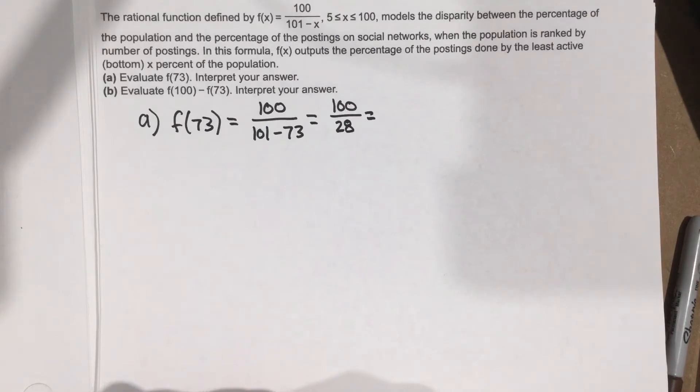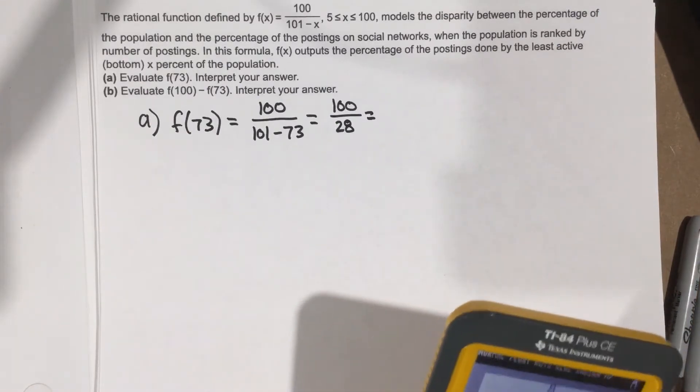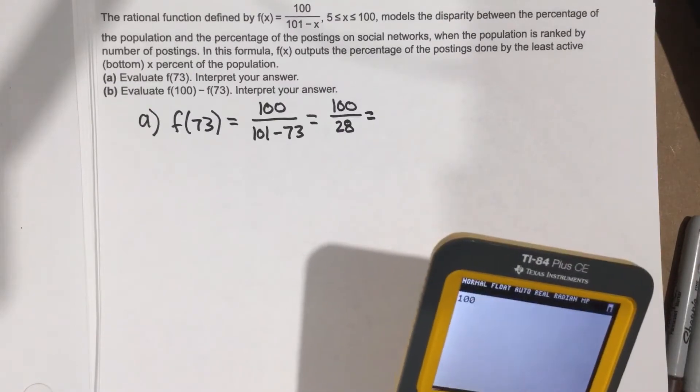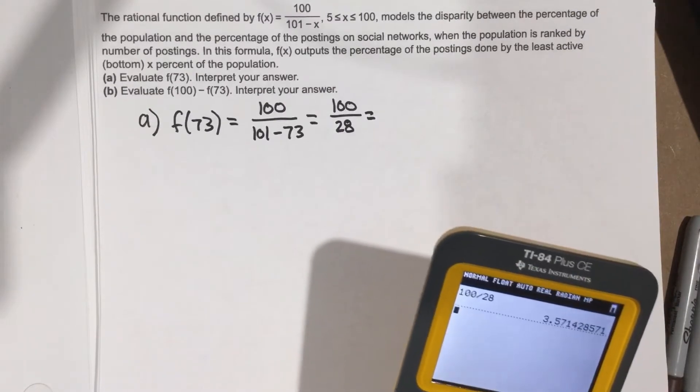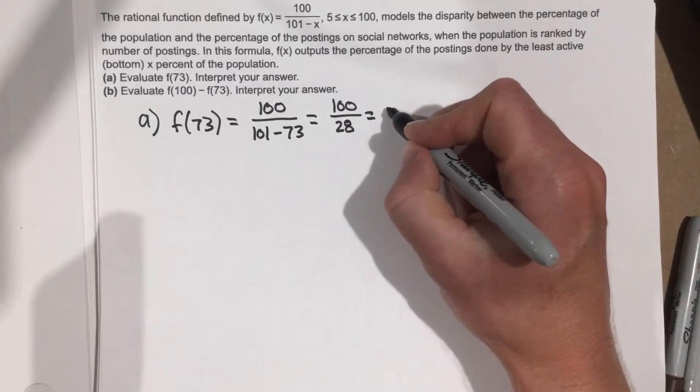Let's reduce that down. 100 divided by 28, we get 3.6%.